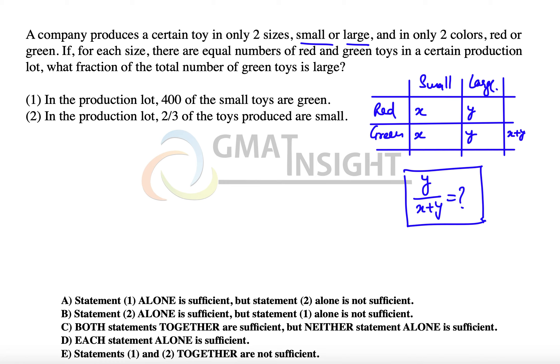Now let's check these statements. The first statement says that in the production lot, 400 of the small toys are green. That means x is equal to 400. 400 of the small toys are green, so x is equal to 400,